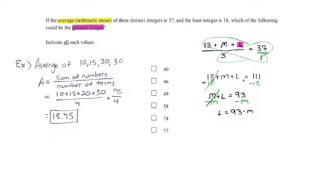This middle number has some constraints on it. Remember, the least integer was 18, which means this has to be bigger than 18, which means one of the possibilities is 19.